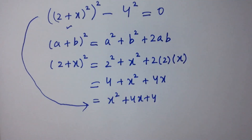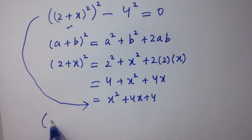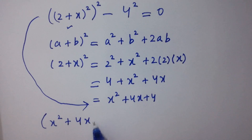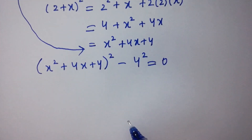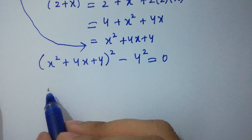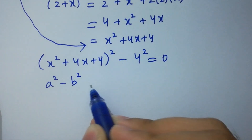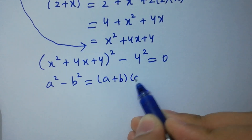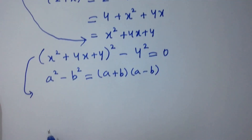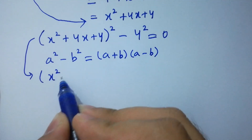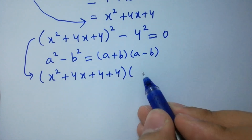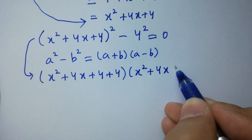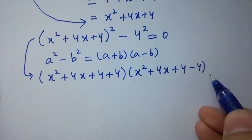I am going to put this into the equation: we have (x² + 4x + 4)² minus 4² equals 0. In the next step, we know the formula a² minus b² equals (a + b)(a − b). Then it will be (x² + 4x + 4 + 4)(x² + 4x + 4 − 4) equals 0.